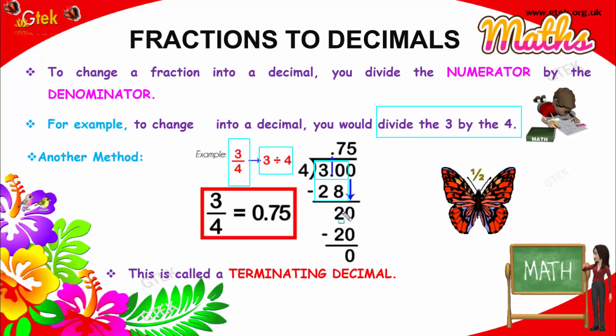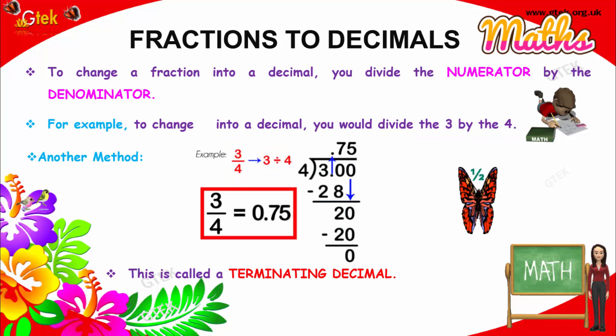Now you need to add 2 here, which is less than 4. So obviously you need to add 0 here to make 20. 5 times 4 is 20, so you got 0 here. The value is 0.75. So 3 divided by 4 is 0.75. This is called a terminating decimal.